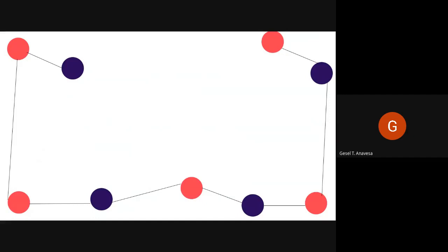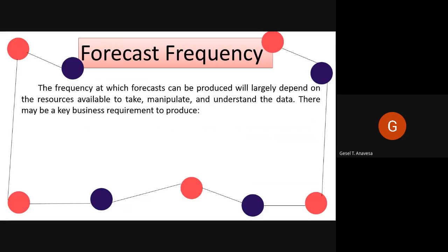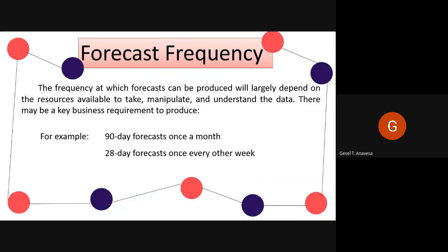Aside from forecasting granularity, we also have to consider forecast frequency. The frequency at which forecasts can be produced will largely depend on the resources available to take, manipulate, and understand the data. There may be a key business requirement to produce, for example, a 90-day forecast once a month, a 28-day forecast once every other week, or a 14-day forecast once a week. Producing accurate forecasts manually will always be a time-consuming process; however, the greater the understanding of booking patterns, the easier it will be to estimate what is likely to happen in the future.